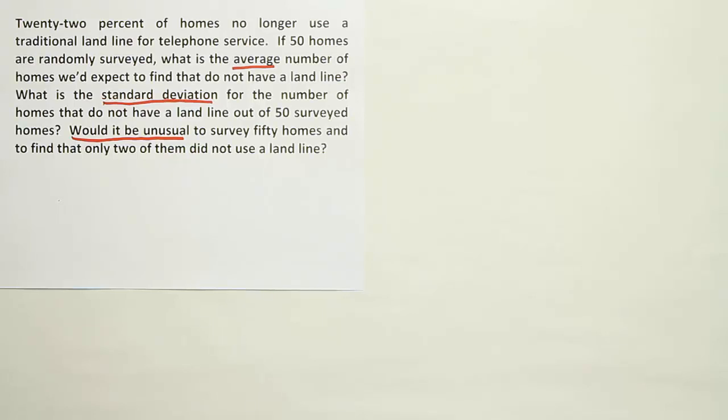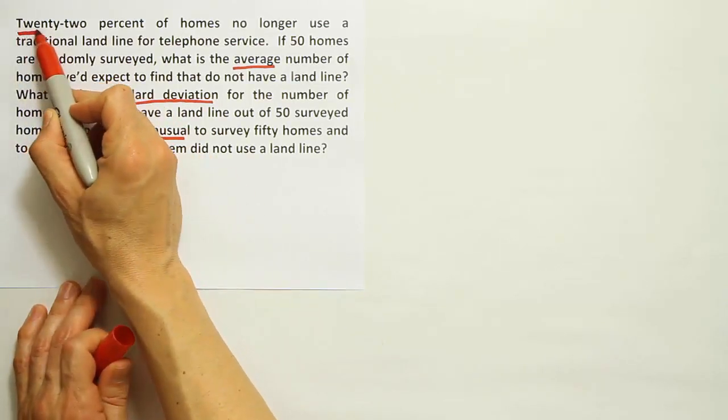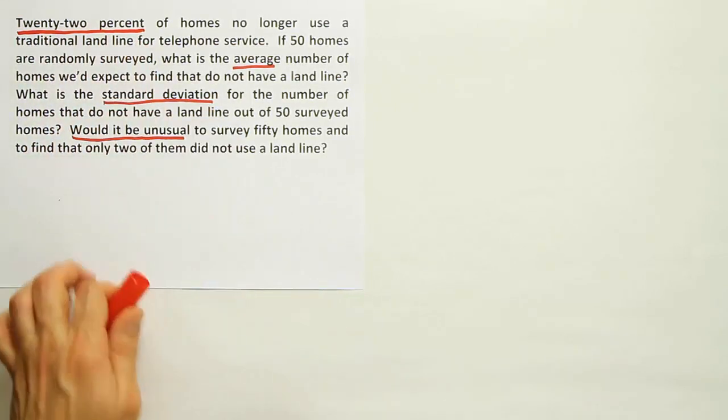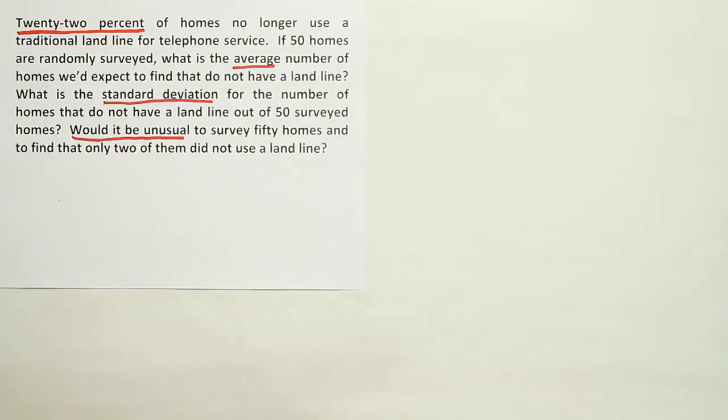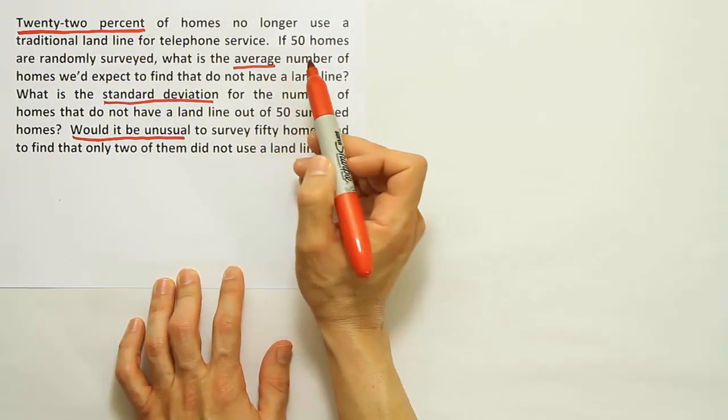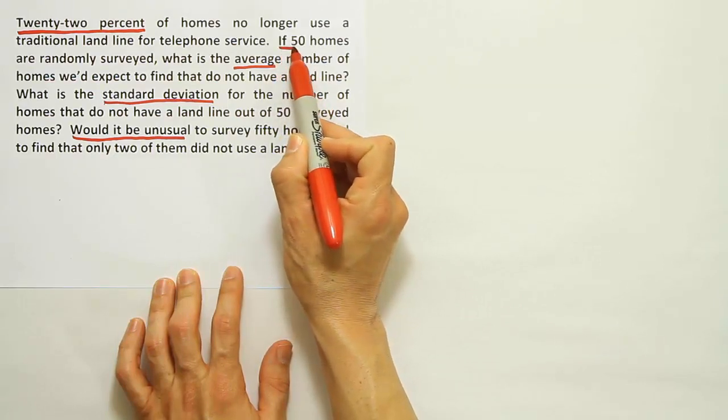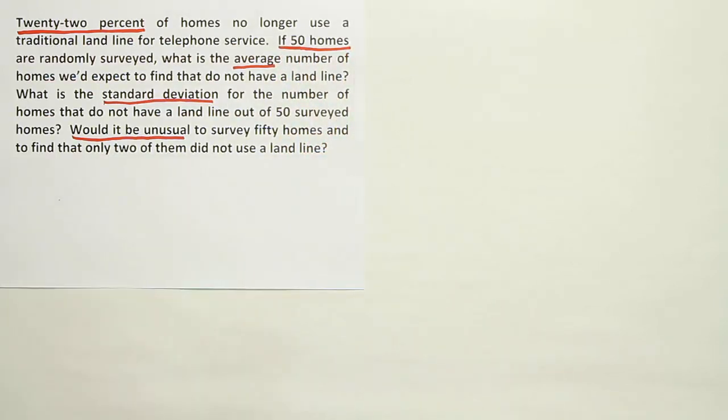What we do have, when we look carefully, is we see that we have one probability, one percentage. We see 22%, that's like a proportion, a percent, or rate. And we have another number. In fact, it seems the only other number in the problem, these 50 homes.